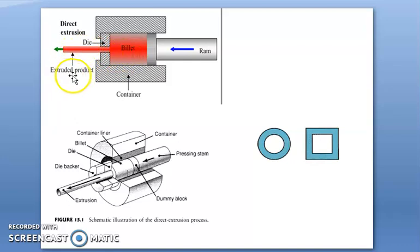Then we get the extruded product. Here dies are fixed to the container only. This is the direction of forcing ram on the container. The same direction of material coming outside from the die.